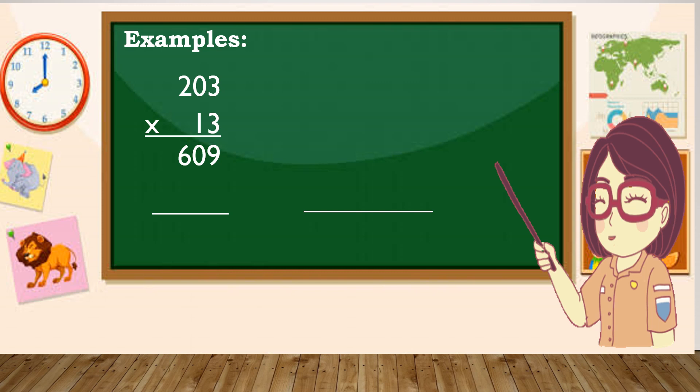Next is the tens place: 1 times 3 is 3, 1 times 0 is 0, 1 times 2 is 2. Then add: 9, 3, 6, 2. Therefore 203 times 13 is 2,639.